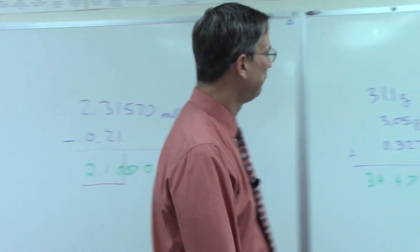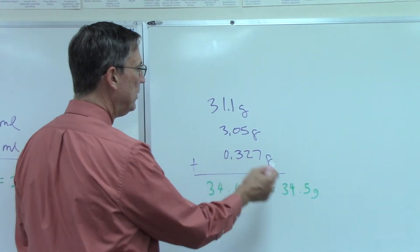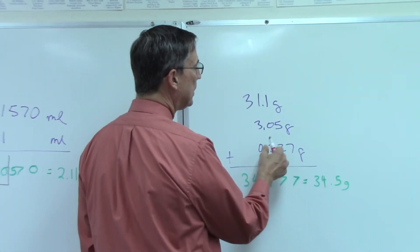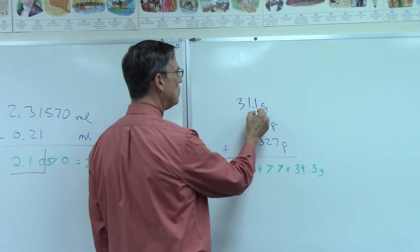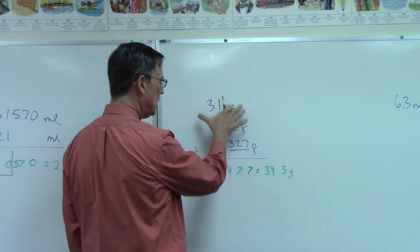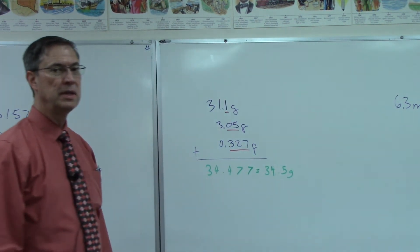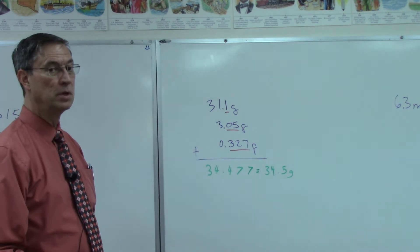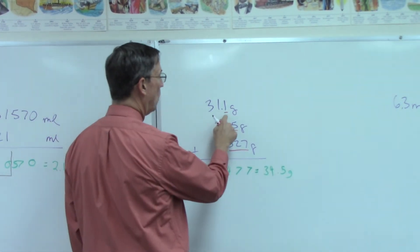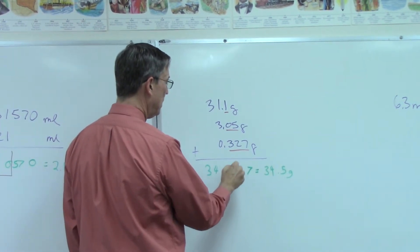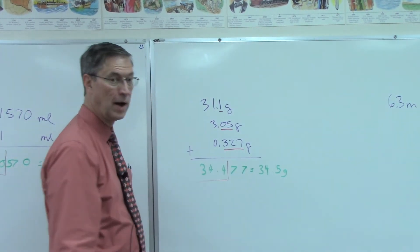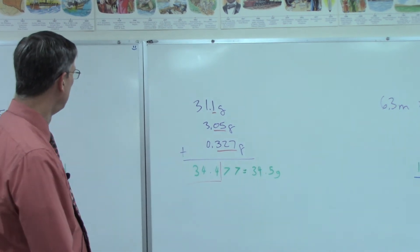Now let's look at this one. I'm adding. All of these have three significant figures, but that's not what we're looking at. We're looking at place value again. So this one has one decimal place, this one has two decimal places, this one has three. So even though I do the math and add them all up, the key is I have to round the answer to the least number of decimal places, which in this case is one decimal place right here. So I'm rounding the answer to here, and so this seven tells me to round the four up to a five.